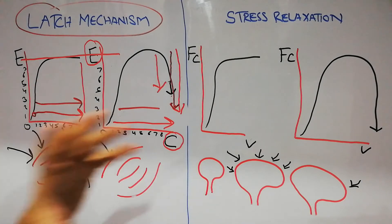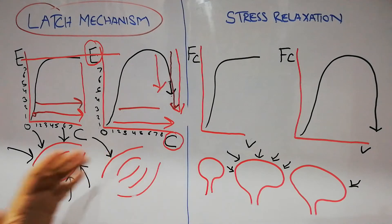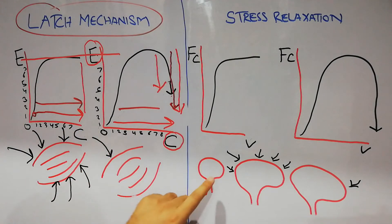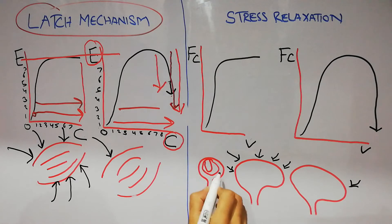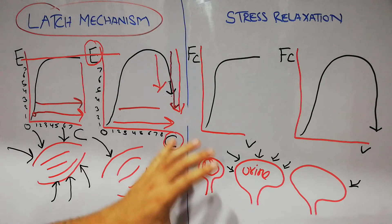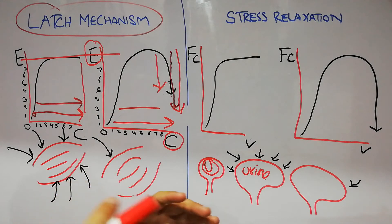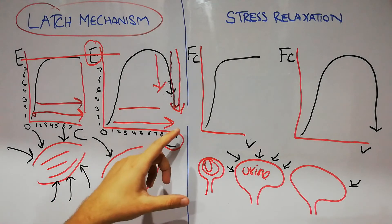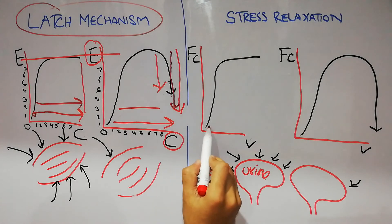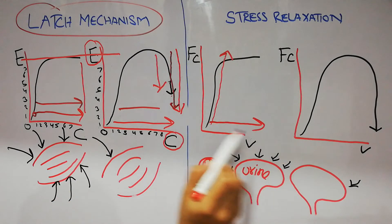Another phenomenon of smooth muscle is stress relaxation, which is somewhat related to the latch mechanism. When the length of a smooth muscle is increased or decreased — for example, we have a urinary bladder with urine in it and suddenly the amount of urine increases — the volume of the bladder increases. As the volume increases due to the high amount of urine, the smooth muscles in the bladder will stretch, their length will increase, and as soon as their length increases, their contraction will also increase.